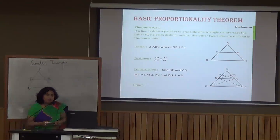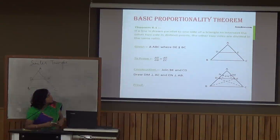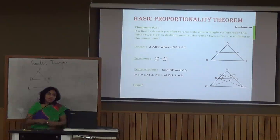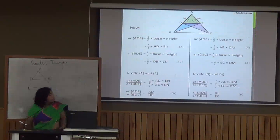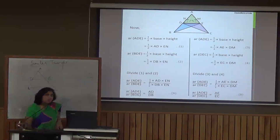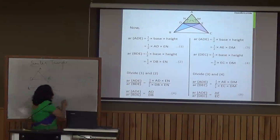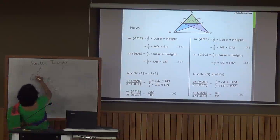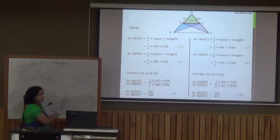For the construction, we join B to E and C to D. Then we draw two perpendiculars: DN perpendicular to AC and EM perpendicular to AB. Let's begin with the proof. We take triangle ADE and find its area taking AD as the base and EN as the perpendicular height. Area of triangle ADE = (1/2) × AD × EN.